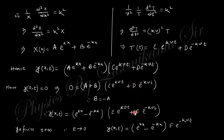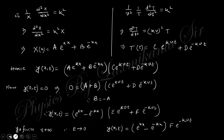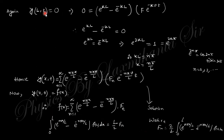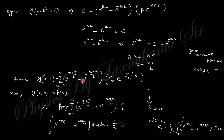The total solution is the product of the two individual solutions. Applying boundary conditions at x = 0 and x = L (both zero), we find that one constant equals the negative of another. Since y must be finite as t tends to infinity, we eliminate the growing exponential term. Applying the condition at x = L gives k = n*pi/L. Substituting this eigenvalue back into the solution gives the particular solution.